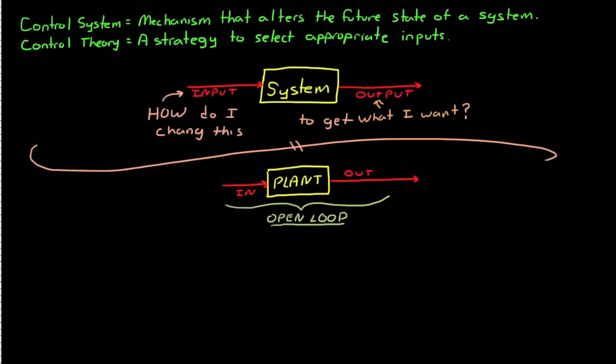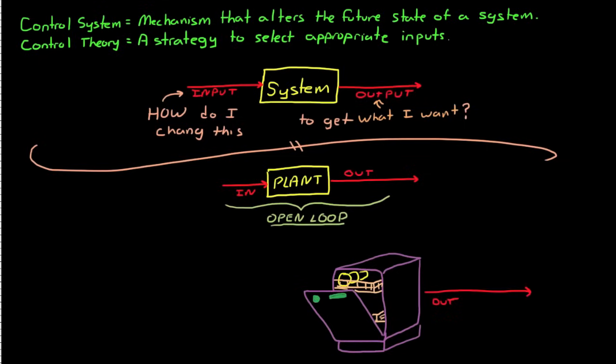Open-loop control systems are typically reserved for simple processes that have well-defined input-to-output behaviors. For example, a dishwasher is an open-loop control system. The goal of a dishwasher, which is the plant, is clean dishes, which is the output.